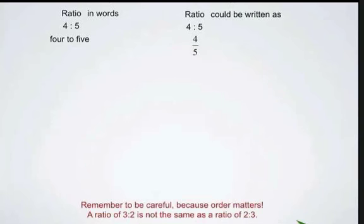You'll have to be careful when creating ratios because order does matter. As you say the values from left to right, or in order that you say them, 4 to 5 for example, they should be written in that format, 4 colon 5, or in fraction format with the first value on top and the second value on the bottom. The ratio of 3 to 2 is not the same as the ratio of 2 to 3. You can see that they're verbally described differently and written differently.